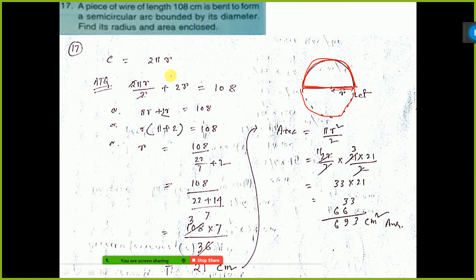So half of circumference, see here, total circumference is 2πr by 2, that is half of circumference. Plus diameter means 2r. So here these two cut. But πr plus 2r, take r common, then π plus 2.